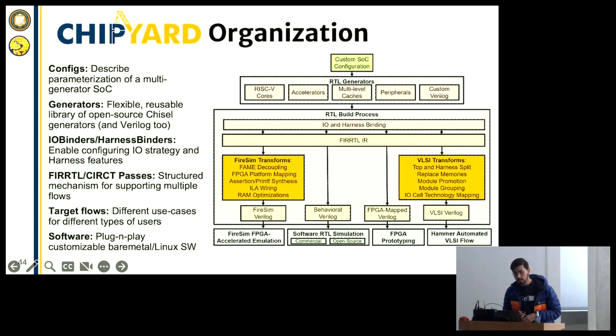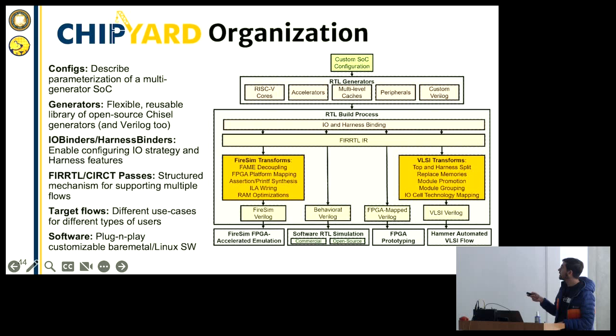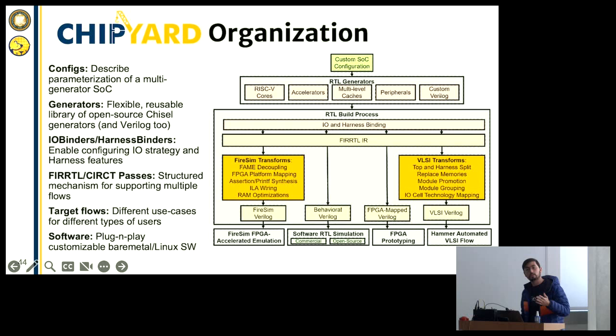That was the quick overview of ChipYard. You have things all the way from the configuration itself — what's the size of the cache, what cores do you want — to the actual RTL generators covering a variety of accelerators, cores, caches, and memory. You have the middle part, which is the actual elaboration flow with all the compiler research like FIRRTL/Circuit. And then you have the bottom end — the simulation flows, simulation, FPGA prototyping, and the like.